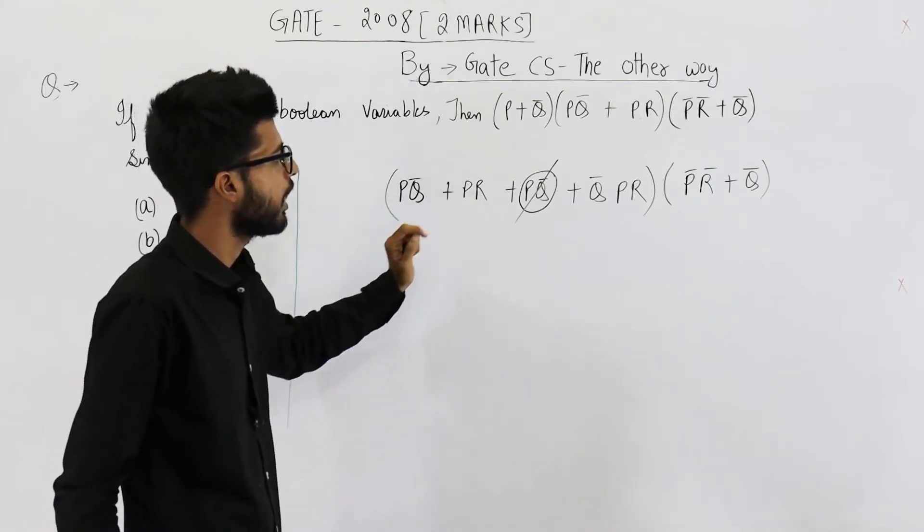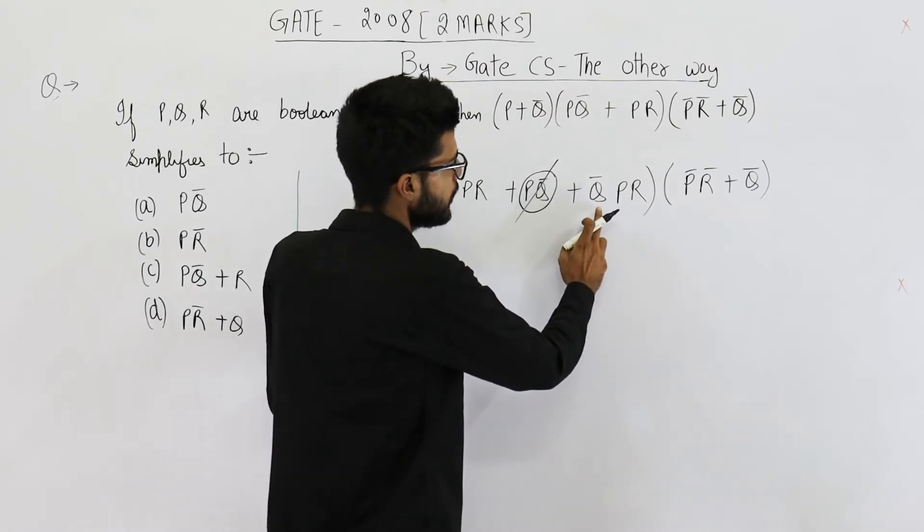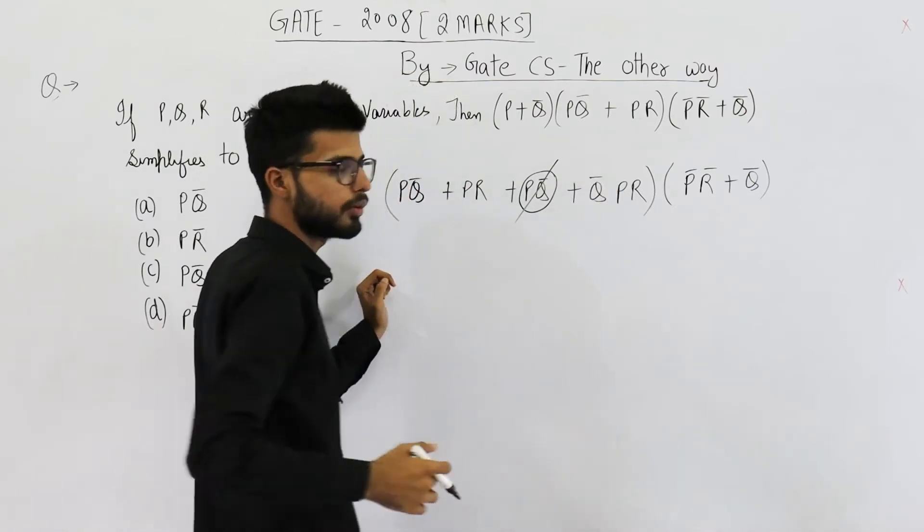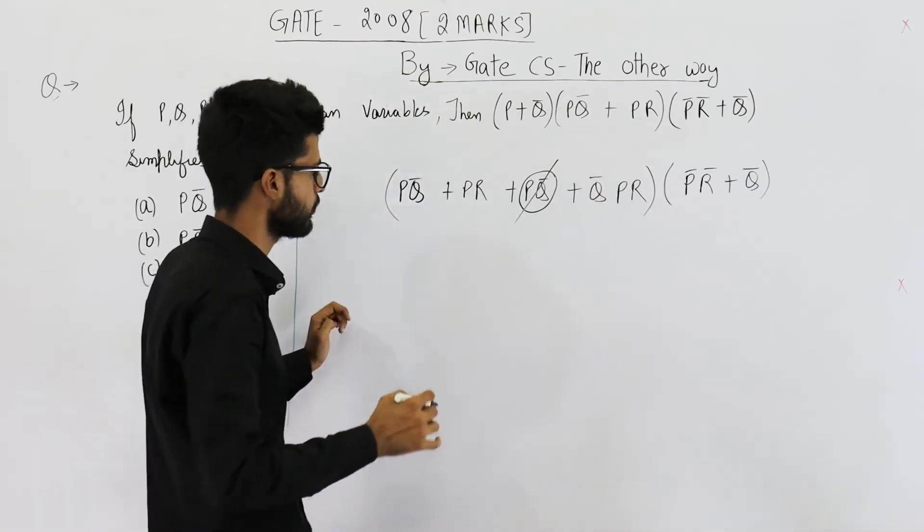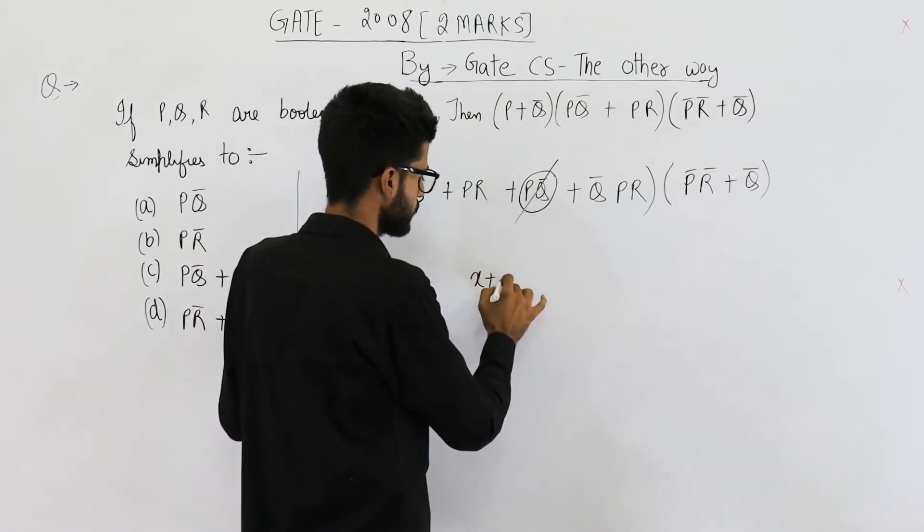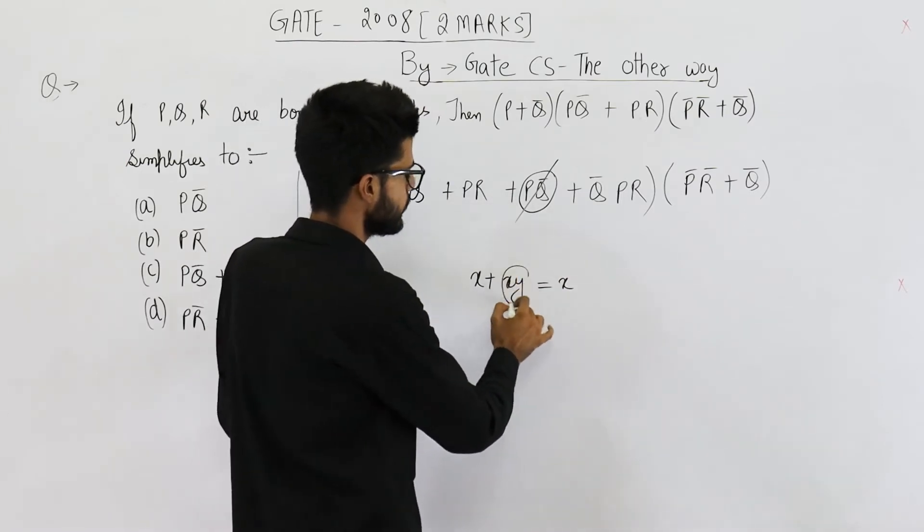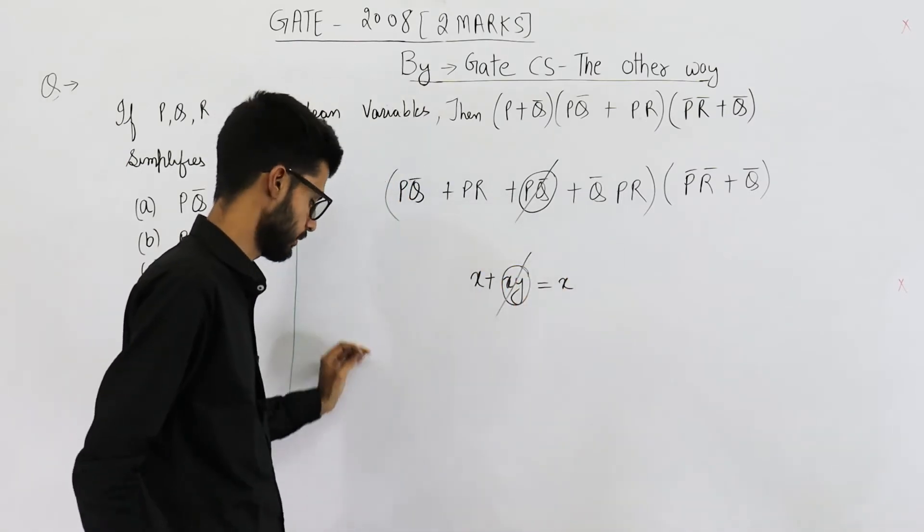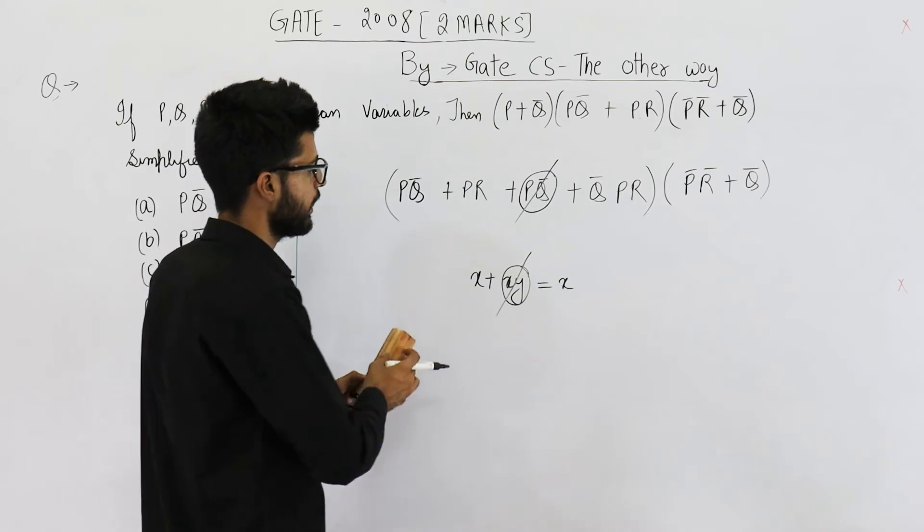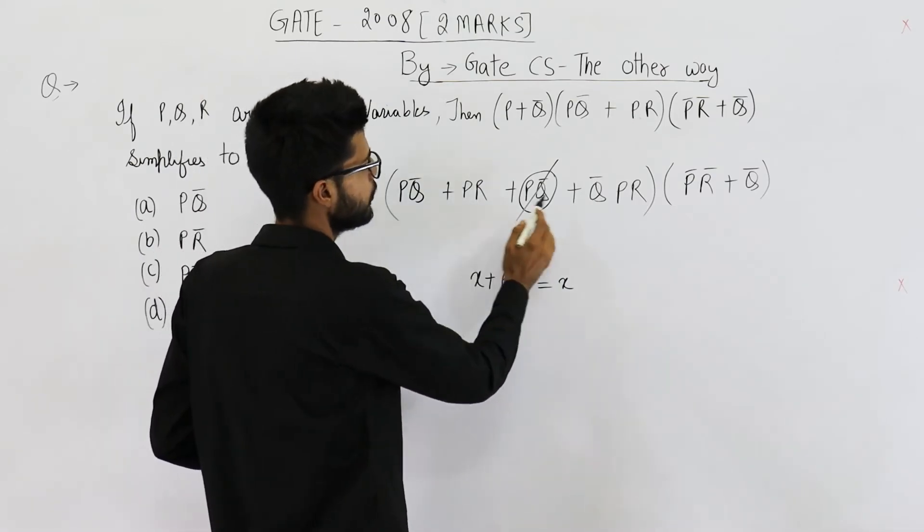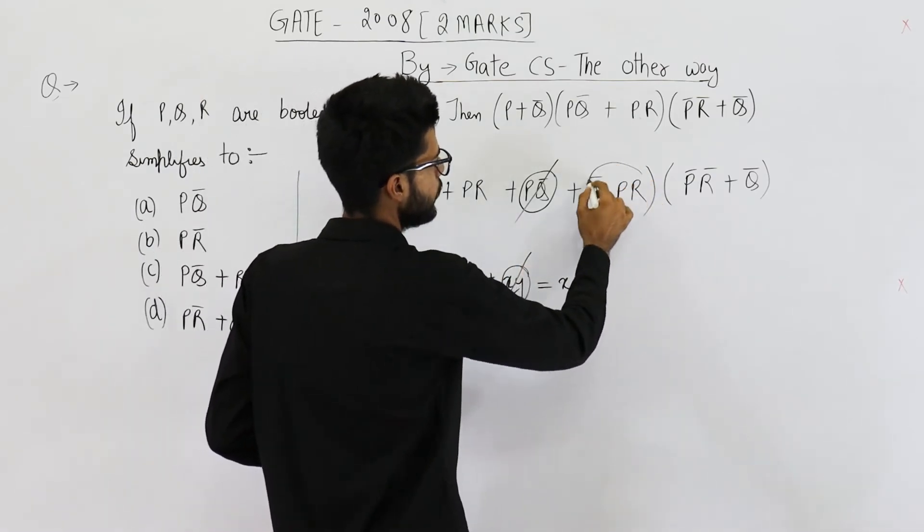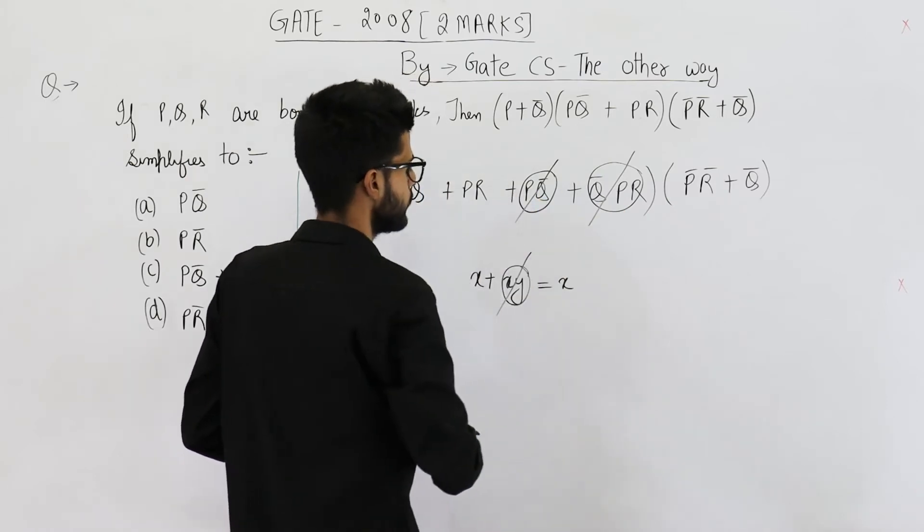And PR + Q̄PR, absorption law is applicable here. Absorption law says X + XY is equal to X only. XY is redundant and can be deleted. So let's apply absorption law here: PR + Q̄PR, so this one can be deleted.